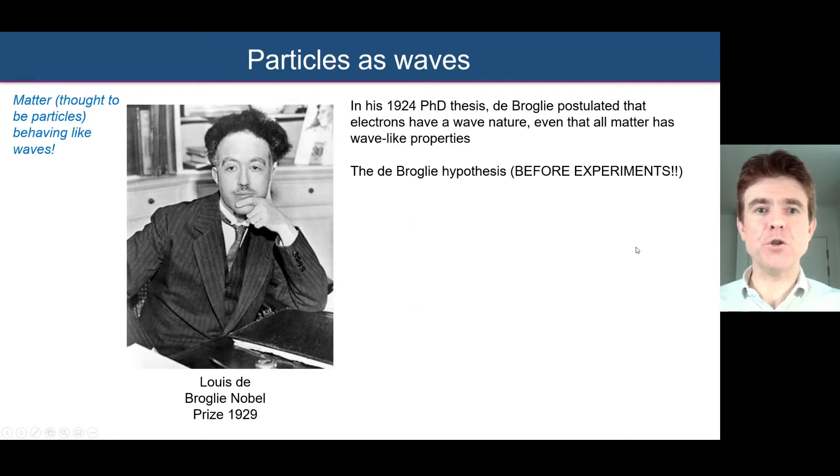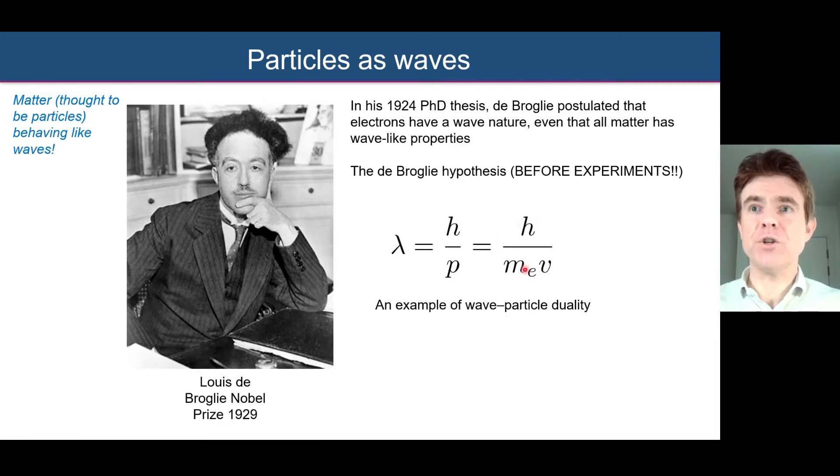This is what Louis de Broglie had hypothesized and put forward in his PhD thesis in 1924. He ended up getting the Nobel Prize because this was eventually experimentally demonstrated. He postulated that electrons have a wave nature and that all matter has wave-like properties. His hypothesis was that if you have mass times velocity, momentum of a particle, then it is associated with a particular wavelength lambda. This is the wave-particle duality: the wavelength lambda, and the conventional particle understanding of mass times velocity, its momentum.